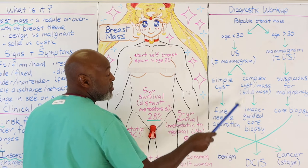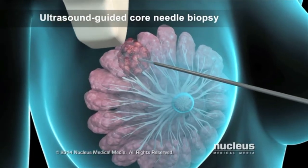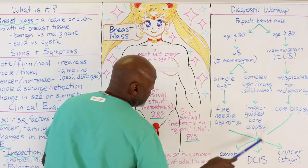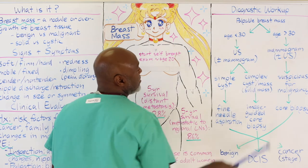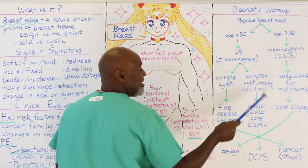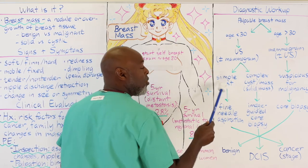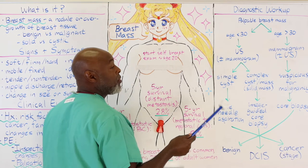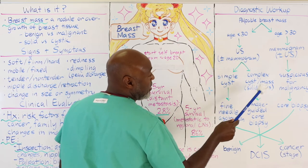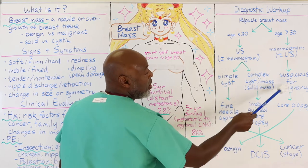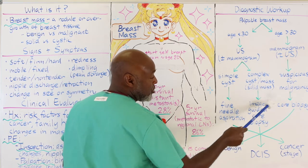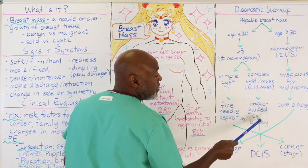For a complex cystic mass or solid mass, an image-guided core biopsy will tell us whether it's benign, DCIS, or cancer. Over the age of 30, the algorithm flips — we use mammogram first and add ultrasound if necessary, since some masses show up better on ultrasound. In either case, if the finding is suspicious for malignancy, you will need an image-guided core biopsy. Both age pathways converge at this point.